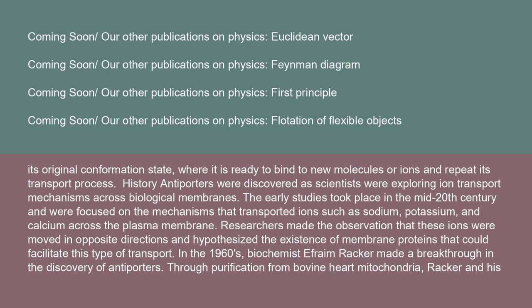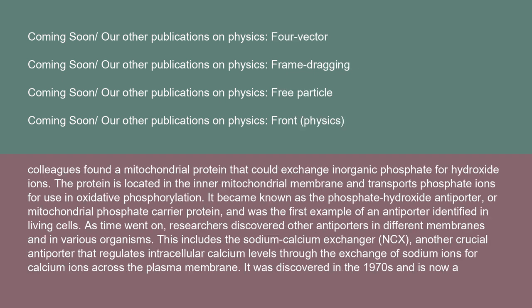Antiporters were discovered as scientists explored ion transport mechanisms across biological membranes. Early studies in the mid-20th century focused on mechanisms transporting ions such as sodium, potassium, and calcium across the plasma membrane. In the 1960s, biochemist Ephraim Racker made a breakthrough by purifying a mitochondrial protein from bovine heart mitochondria that could exchange inorganic phosphate for hydroxide ions. This protein, located in the inner mitochondrial membrane and used in oxidative phosphorylation, became known as the phosphate-hydroxide antiporter or mitochondrial phosphate carrier protein — the first antiporter identified in living cells.